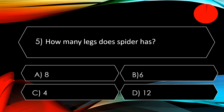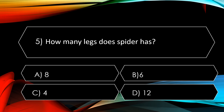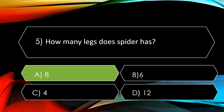The next question: how many legs does a spider have? The options are A. 8, B. 6, C. 4, and D. 12. The correct option is A. 8.